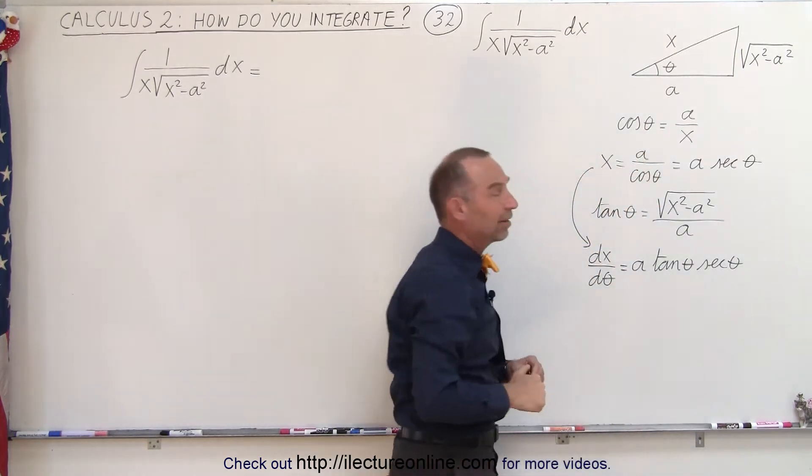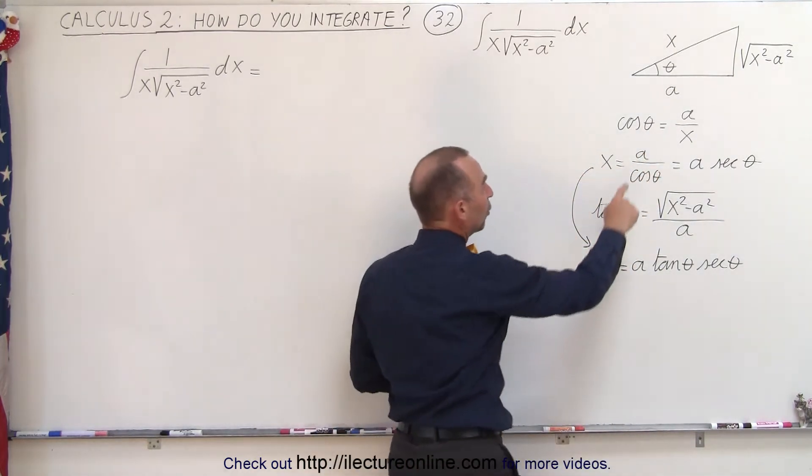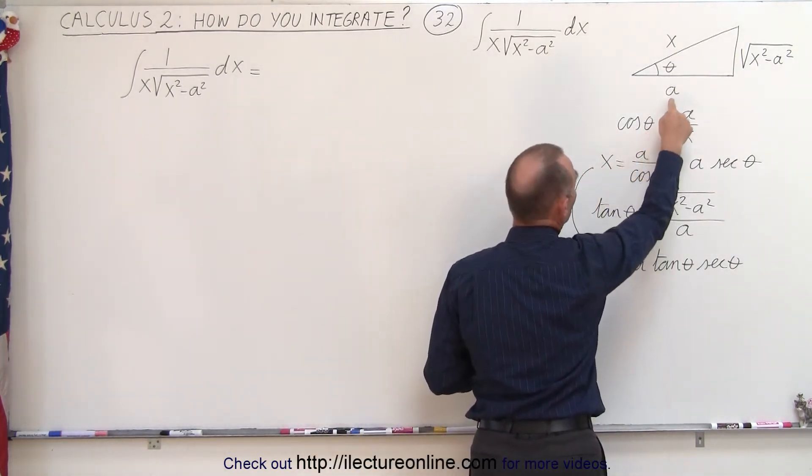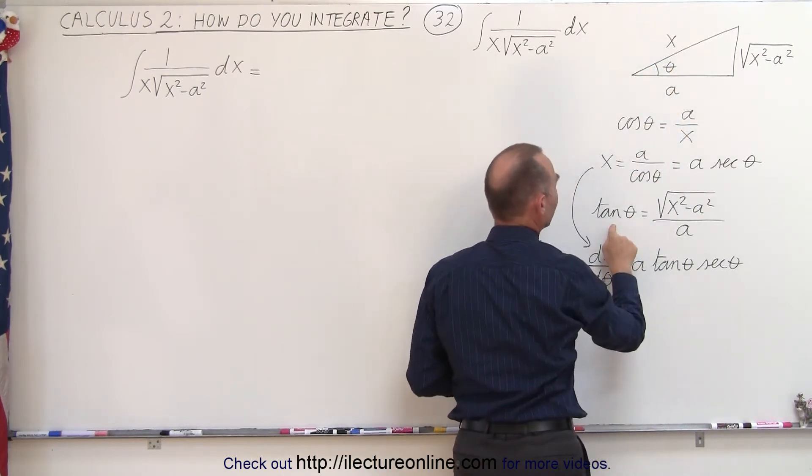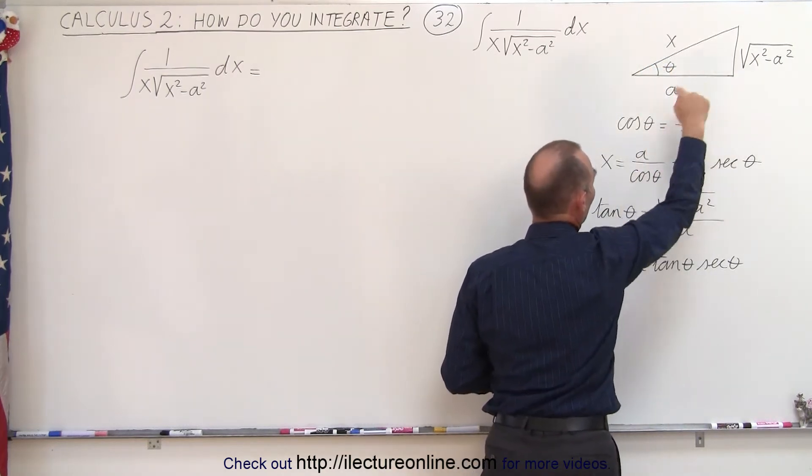and the opposite side is x squared minus a squared, which means that the cosine of the angle is equal to the adjacent side over the hypotenuse, and the tangent of the angle is equal to the opposite over the adjacent.